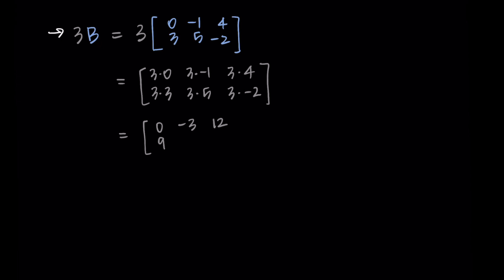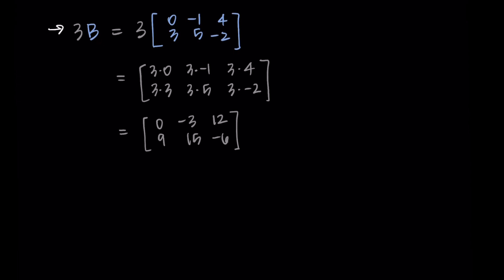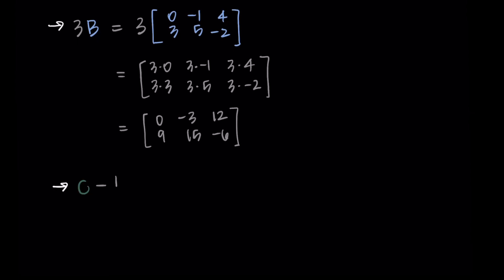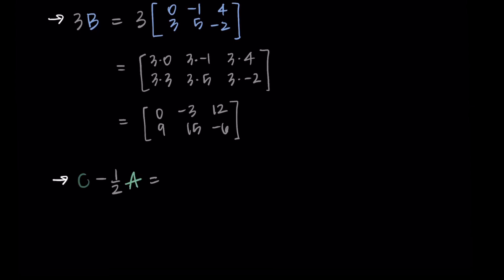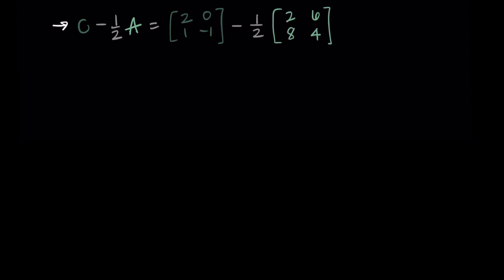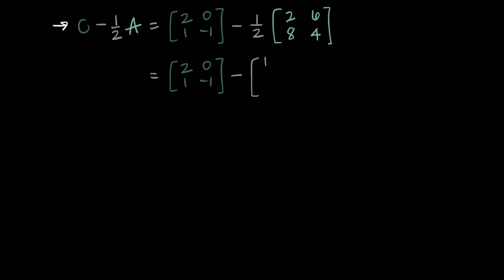Okay, lastly let's do C minus one half A. So I'm going to put the matrix C and then subtract one half of the matrix A. I'll first distribute that one half into my terms, so I'm going to multiply all of the terms of A by one half, which is dividing them by two. So now I'm left with the matrix C minus the matrix [1, 3, 4, 2].